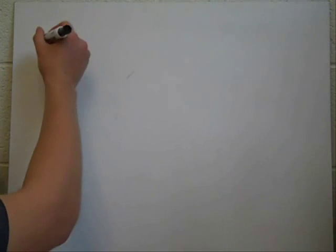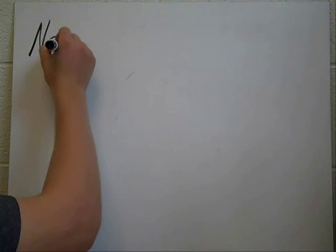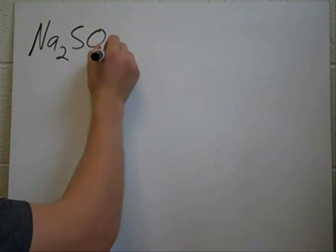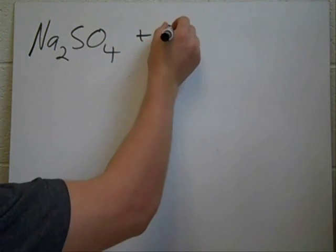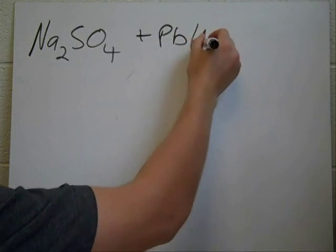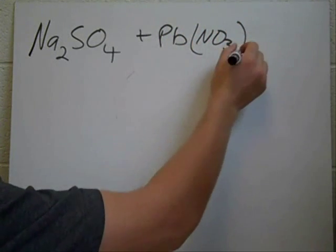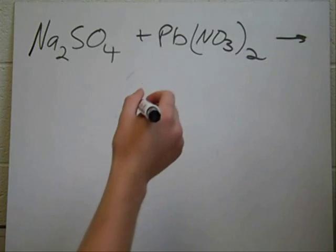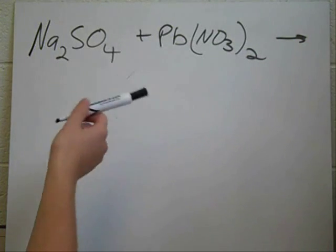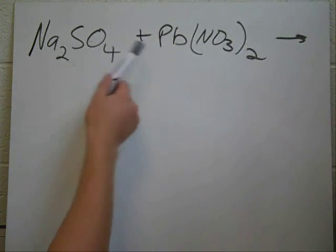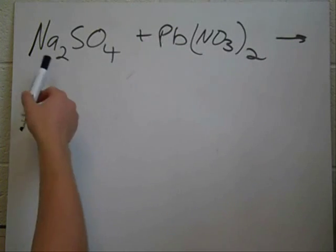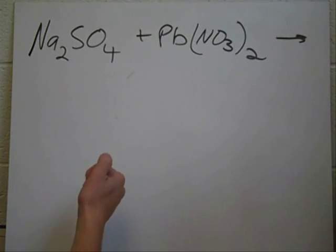The first one is Na2SO4 plus Pb(NO3)2. Now, because there are two molecules in each of these, you're going to do a double switch of the dancing partners.